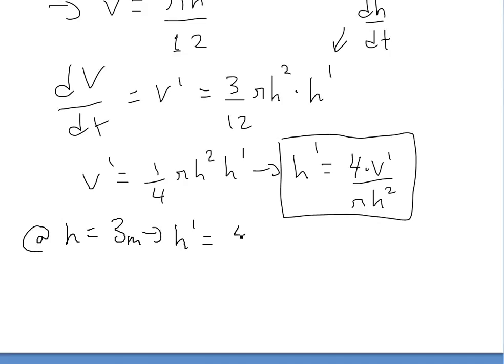So we have h prime is equal to 4 times 2 meters cubed per minute. And then divided by π. This is 3 squared. That's just going to be 9 meters squared. So now the meters cubed divided by meters squared, we'll just left it with a meter. So we'll get, this is going to be 8 over π times 9.